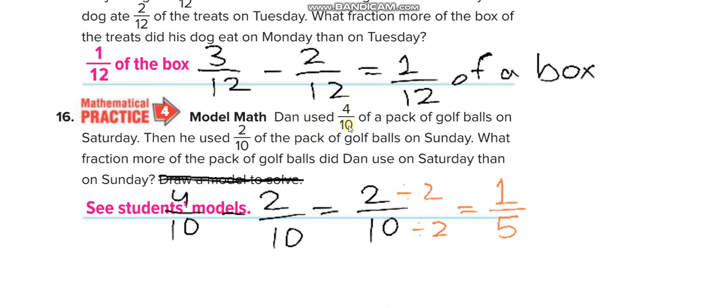Similarly here, Dan used 4/10 of a pack of golf balls on Saturday and 2/10 on Sunday. So how much more did he use? 4/10 minus 2/10, 4 minus 2 equals 2/10. Then we can simplify.